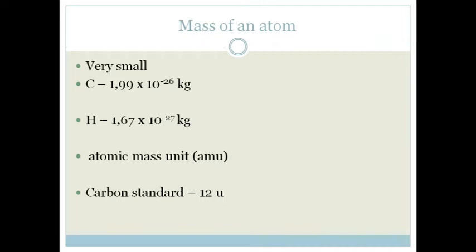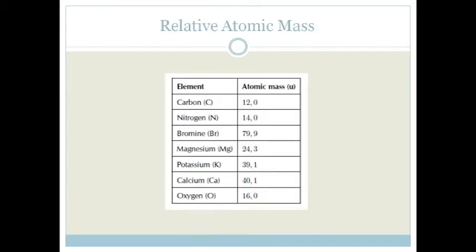So then what they did was they compared all the masses of all atoms. So for example, we've got nitrogen. Nitrogen is 14 units. So you can see that nitrogen is heavier than carbon.